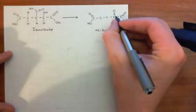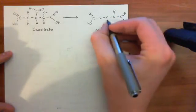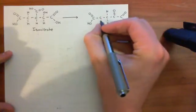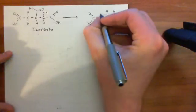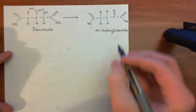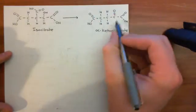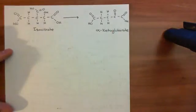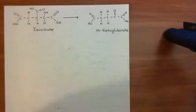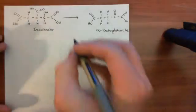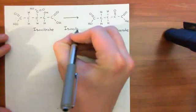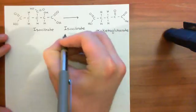So we'll put a keto group there. That's the keto sorted, and then all the other carbons can just have hydrogens coming off them to saturate them. This then is the structure of alpha-ketoglutarate — glutaric acid with a keto group off the alpha carbon here. The reaction is catalyzed by an enzyme called isocitrate dehydrogenase.